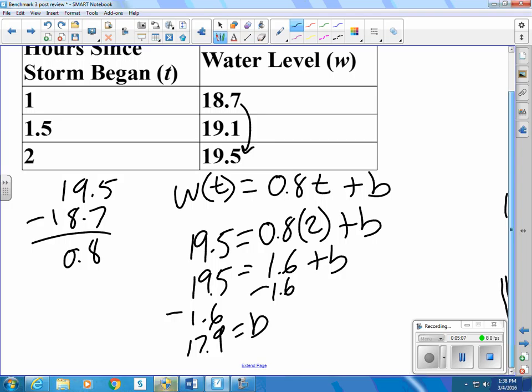So the equation, we can finish by replacing the b with the 17.9. My equation of the water as a function of time is equal to 0.8 times the number of hours plus 17.9.